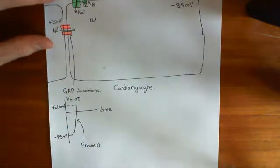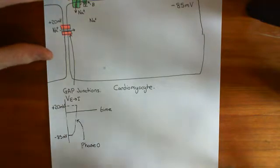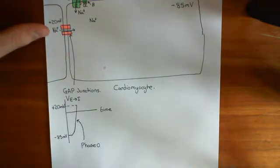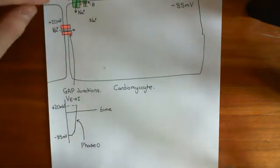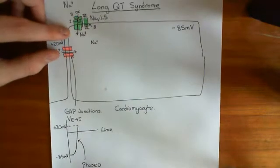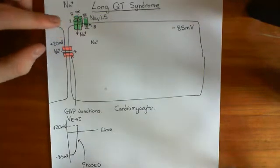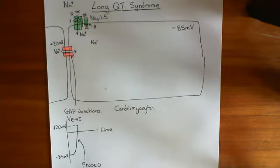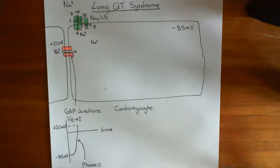It's important to stress that these channels are not voltage-inactivated — they inactivate after a certain amount of time. So after a certain amount of time, these voltage-gated sodium channels close, and by the time they close, they have achieved a certain amount of depolarization, generally depolarizing the cell up to plus 20 millivolts.